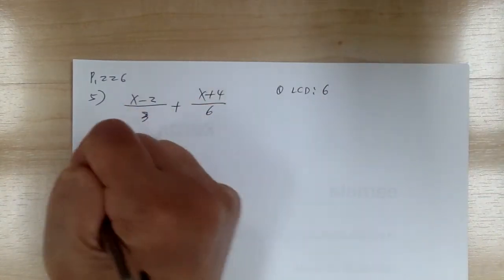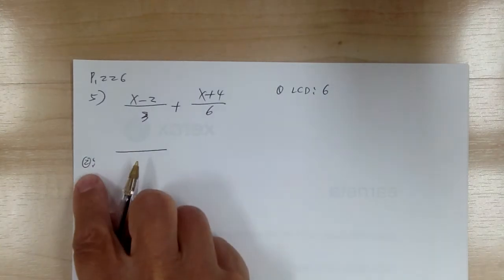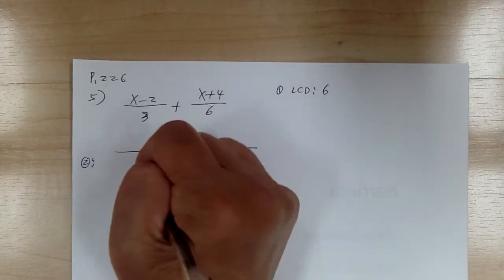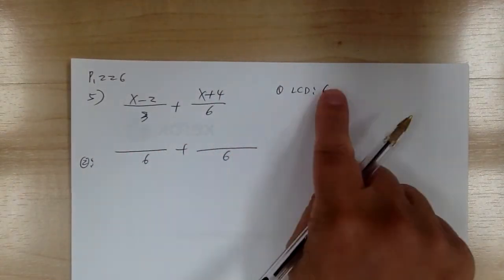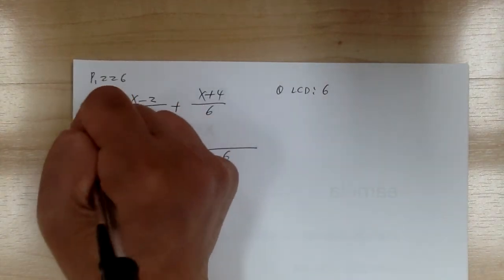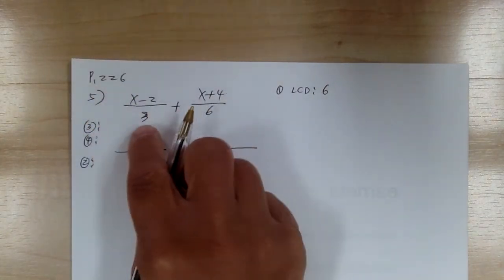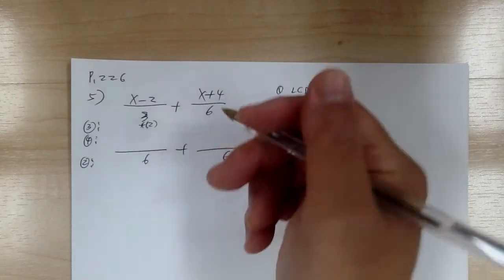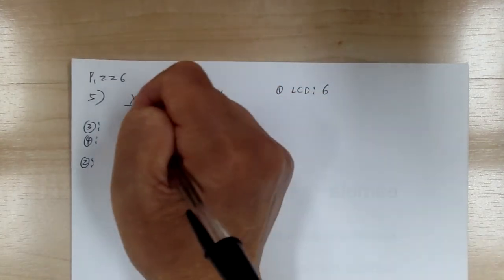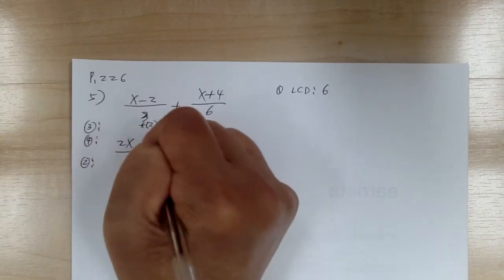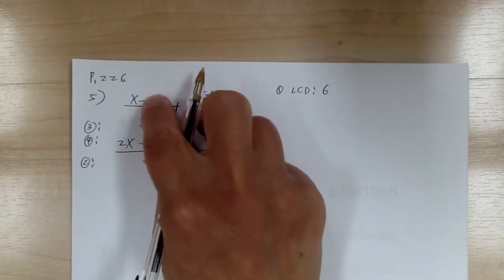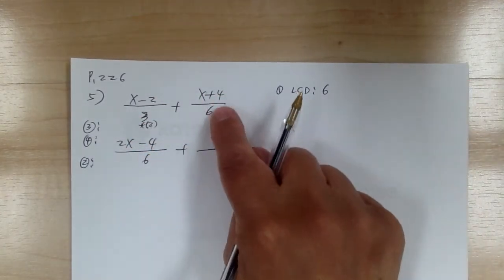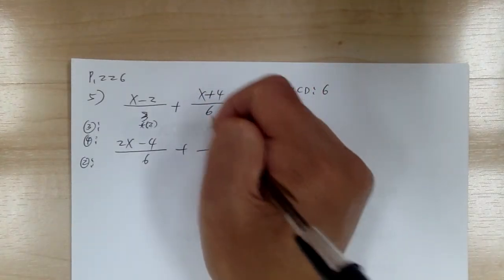Step two: get your common denominator. You don't have to write down the steps, but I'm writing them to help you memorize. Don't worry about anything on top — get the common denominator first. Step three and four: from three to six, you need to multiply by two. So three times two gives you six, and x minus two times two gives you two x minus four. Two times x is two x, two times negative two is negative four — go and multiply it out already, or you'll lose track.